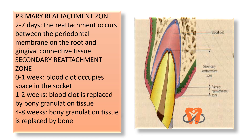When we reposition the tooth, at the microscopic level there is a primary reattachment zone. In the first two to seven days, reattachment occurs between the periodontal membrane on the root and the gingival connective tissue. The empty socket gets filled with blood and blood clots. In the first one to two weeks, this blood clot is replaced by bony granulation tissue. Within four to eight weeks, the bony granulation tissue is replaced by bone — and this is how the root gets repositioned firmly in its new place.